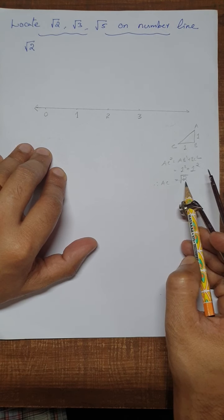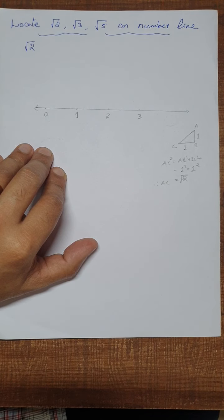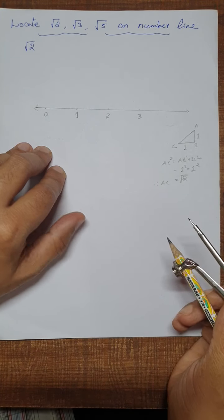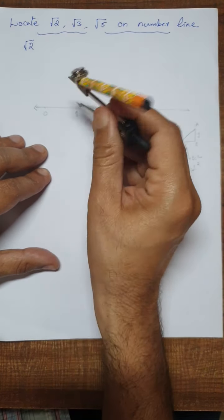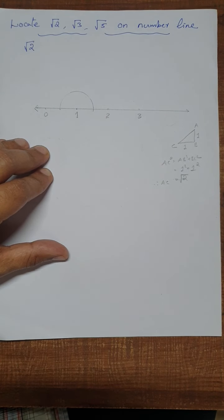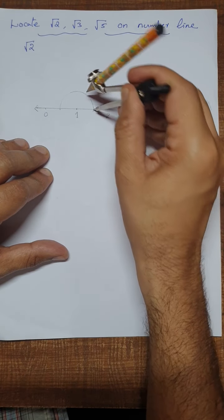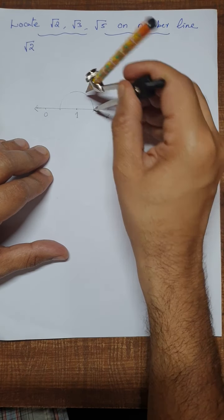Here we are going to construct a right triangle whose base is one unit and height one unit. We take base one unit and make a perpendicular — we make a right angle at one. We draw a semicircle of any radius, then using the same radius we draw a perpendicular at this point. We join them and now we have a perpendicular.